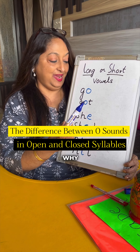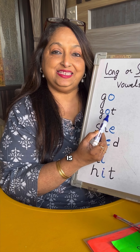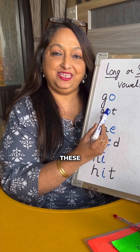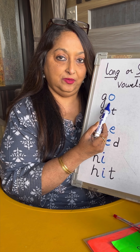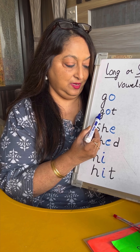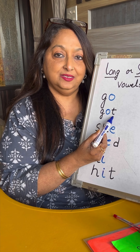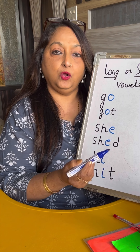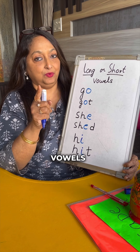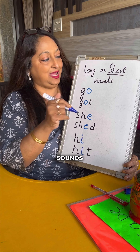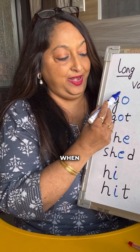Tell me, why is it the O sound is different in these two words? G-O, GO. G-O-T, GOT. That's because vowels have two sounds: a long sound and a short sound.